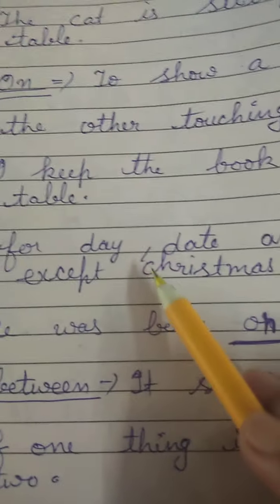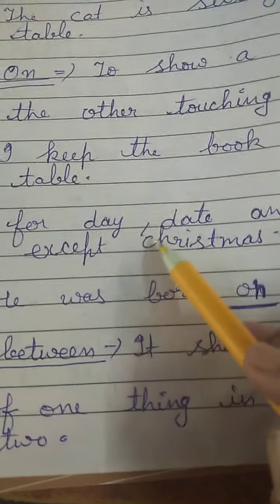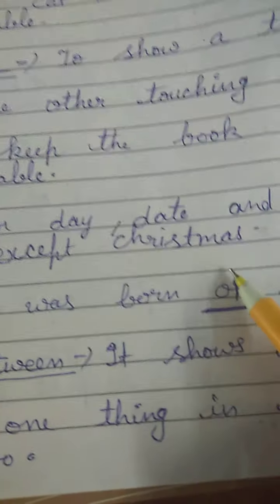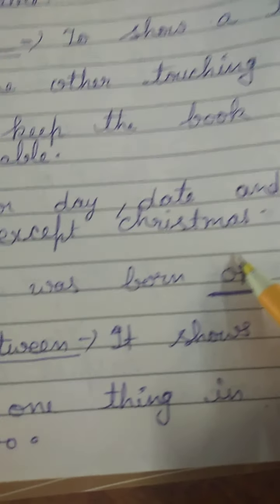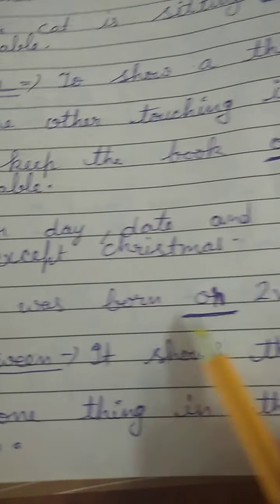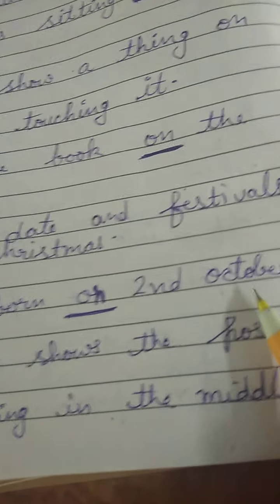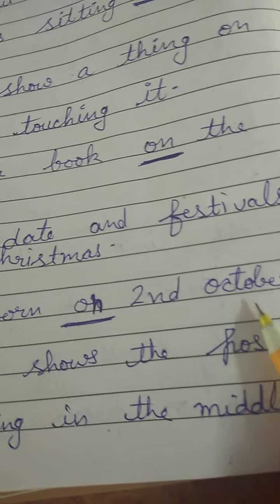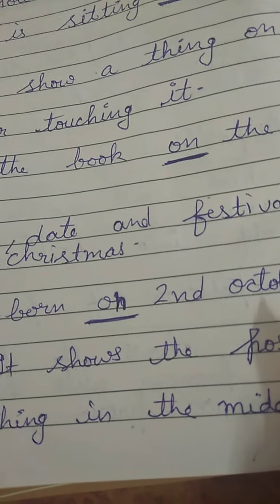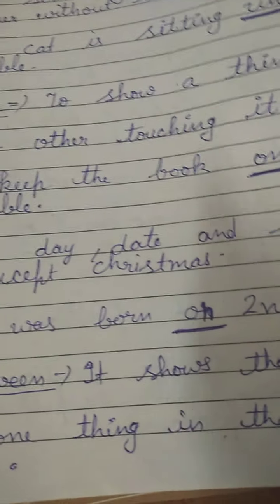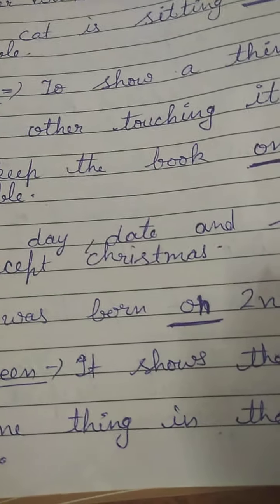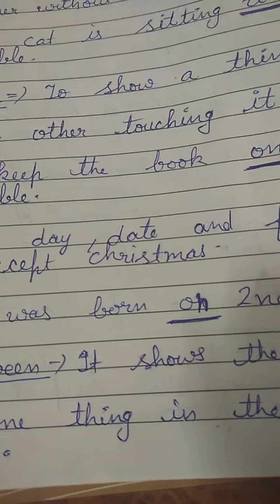'On' is also used for day, date, and festivals, except the Christmas festival. For example: he was born on 2nd of October; he was born on Monday. So, to specify any day or date, we use 'on'.